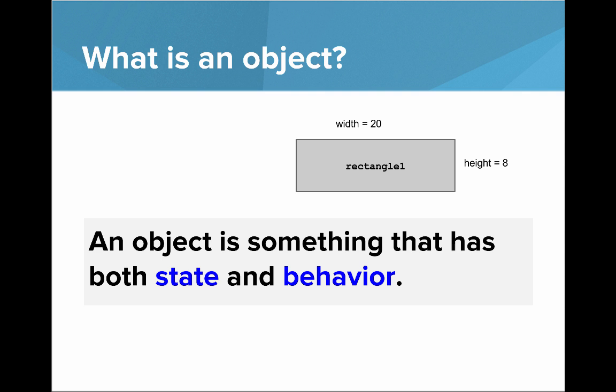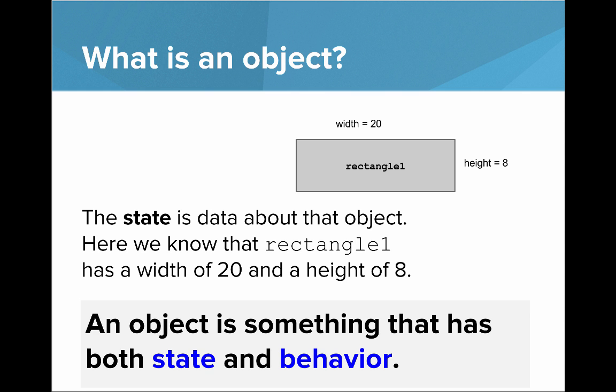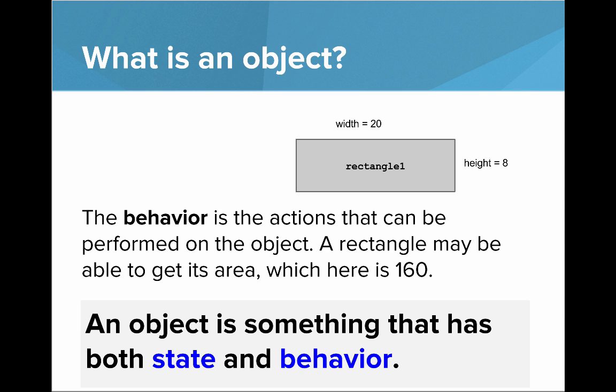So here we're looking at our rectangle object. The state is data about that object. Here we know that rectangle one has a width of 20 and a height of 8. The behavior is the actions that can be performed by the object. A rectangle like this one, for example, might be able to get its area, which here is 160.